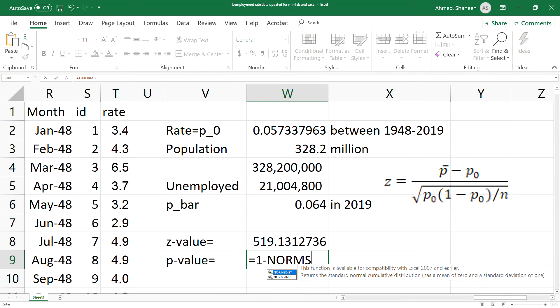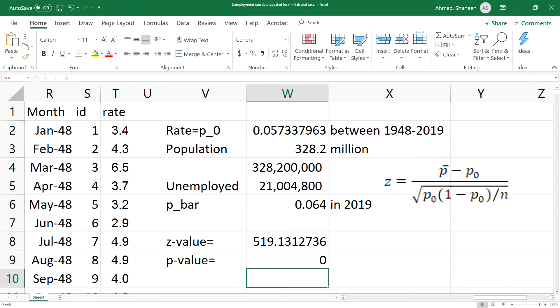Now to get the p-value from that, simply it will be one minus norm dist. That's the p-value, basically zero. This is a very huge high probability so it's going to go all the way to the end of the distribution tail.